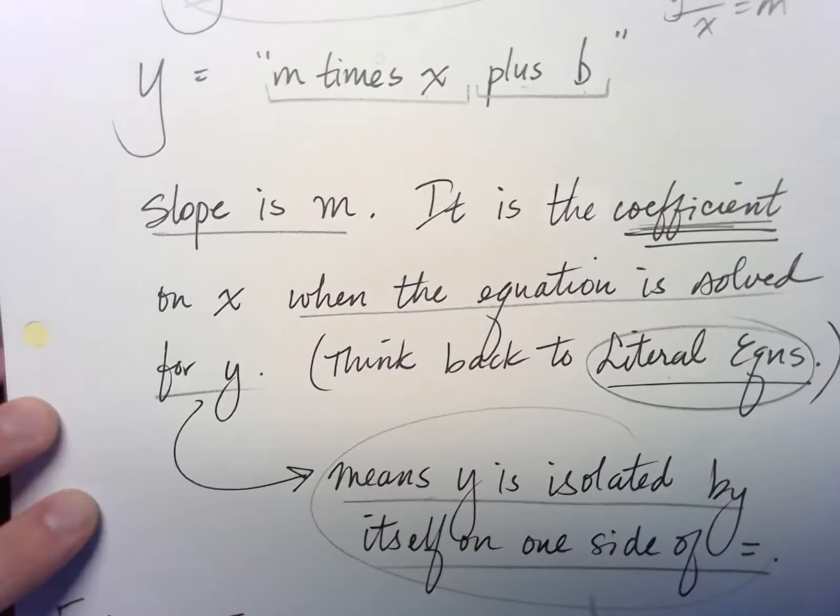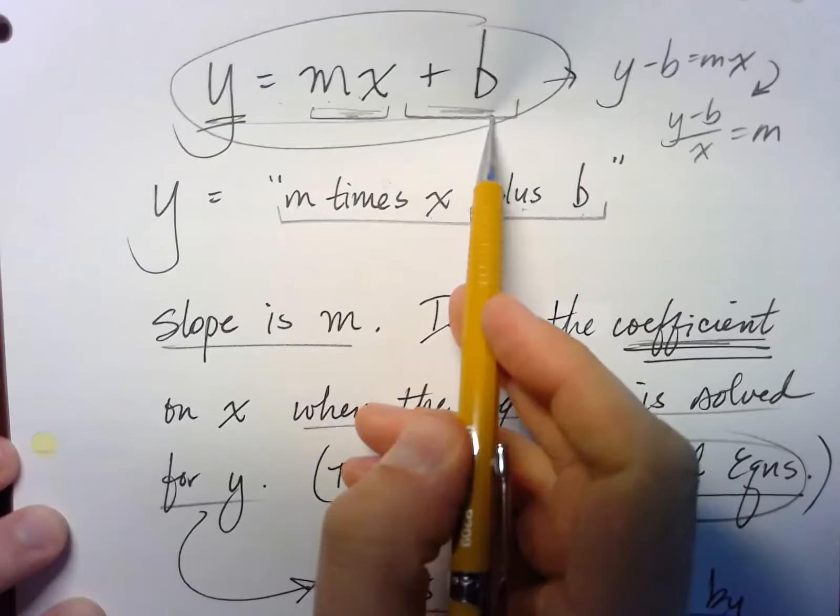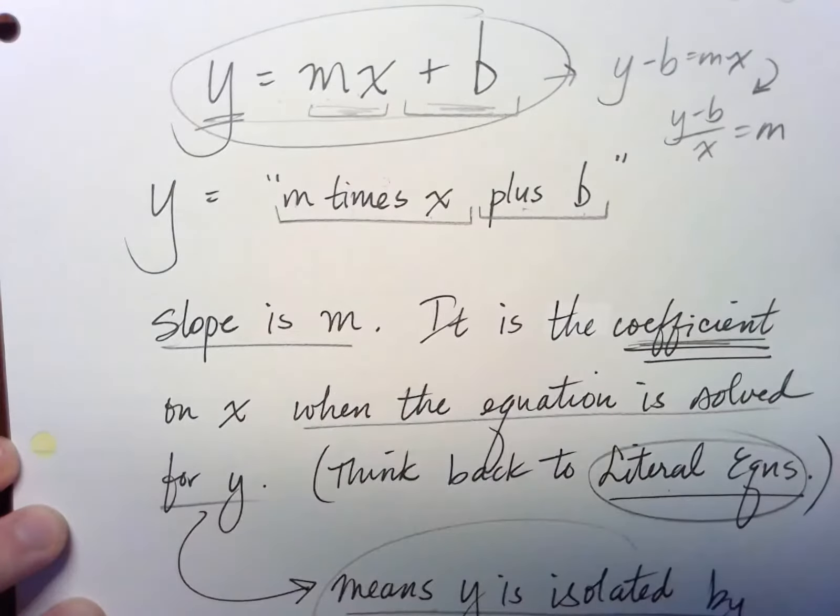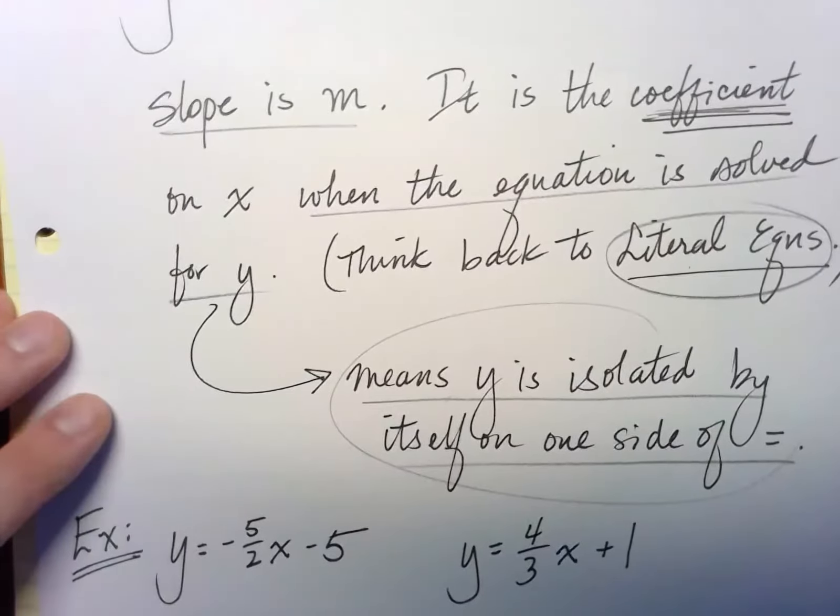See right here? And if that's the case, if y is solved for, if the equation is solved for y, then it is in slope-intercept form, and your slope is just the coefficient on the x. So here's some examples. Here's some examples.